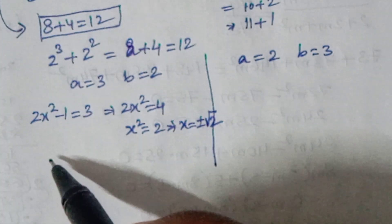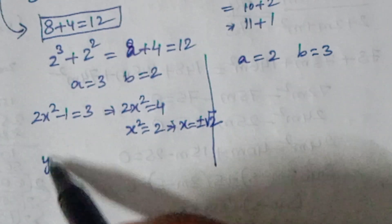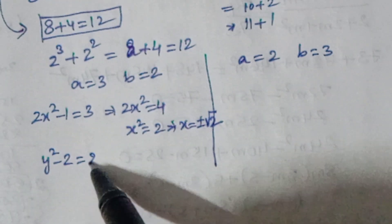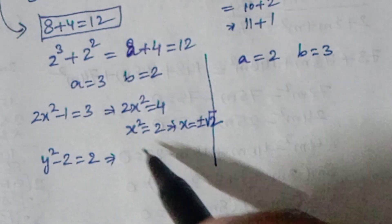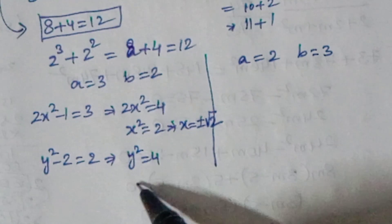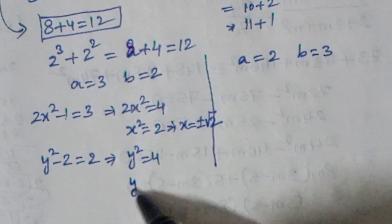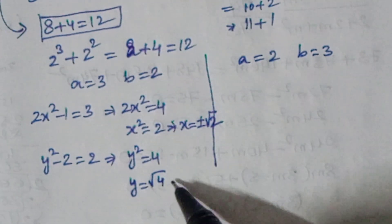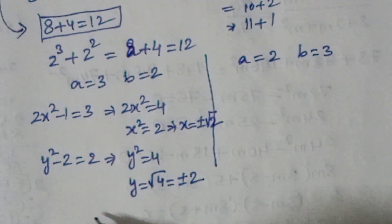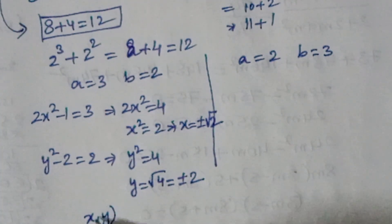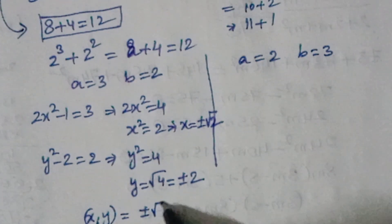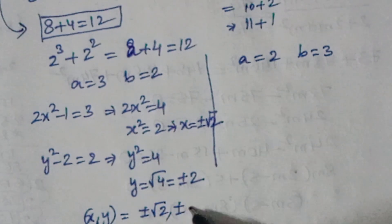For b = 2: y² - 2 = 2, so y² = 4, and y = ±2. Therefore in Case 1, the values are x = ±√2 and y = ±2.